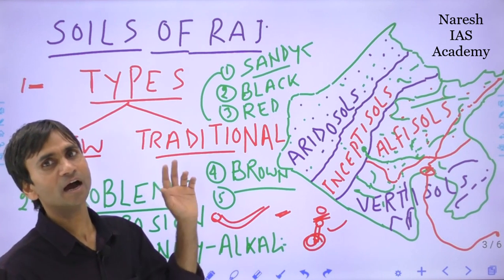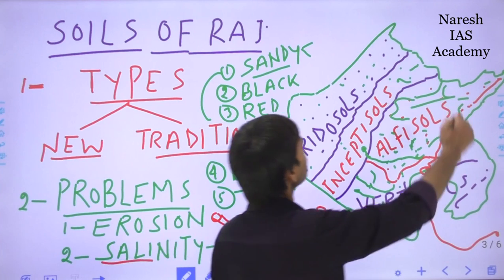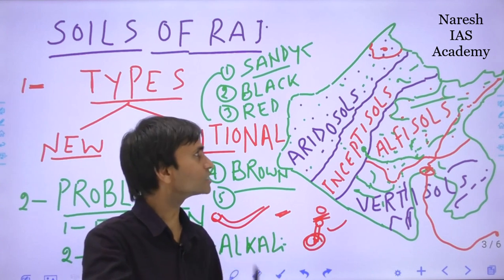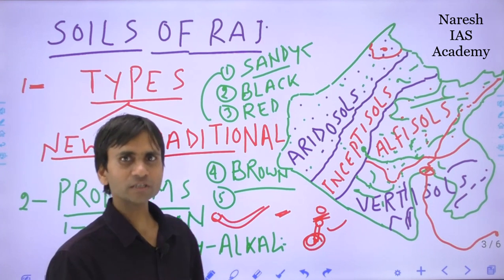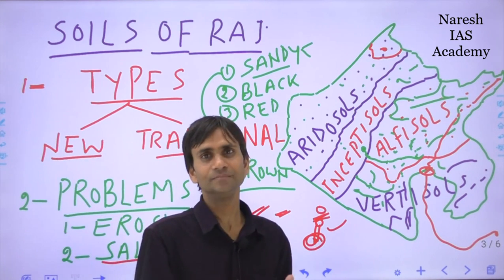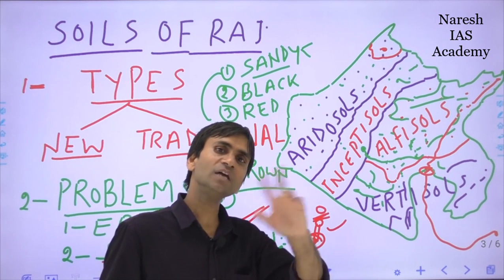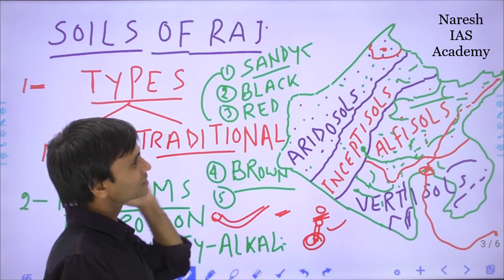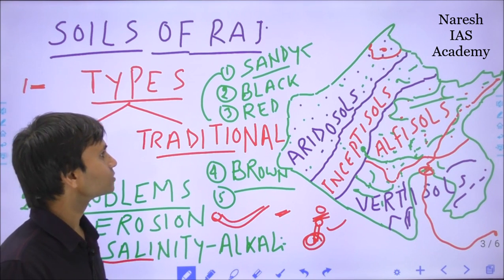The Government of India introduced the Soil Health Card Scheme first in Rajasthan - specifically in the Suratgarh region of the Ganganagar district in 2013-2014. Through this scheme, scientists collected samples of different types of soils across Rajasthan, tested them, and pointed out major soil problems. According to the findings, both state and central governments are collectively taking many steps to address these problems. This concludes the classification of soils, various problems, and government steps taken in Rajasthan.